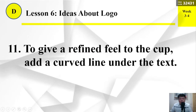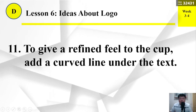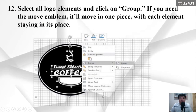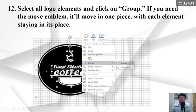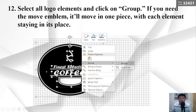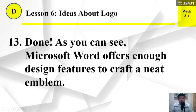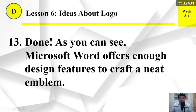Number 11: To give a refined feel to the cup, add a curved line under the text. Number 12: Select all logo elements and click on Group. If you need to move the emblem, it moves in one piece with each element staying in its place. Number 13: Done. As you can see, Microsoft Word offers enough design features to craft a neat emblem.